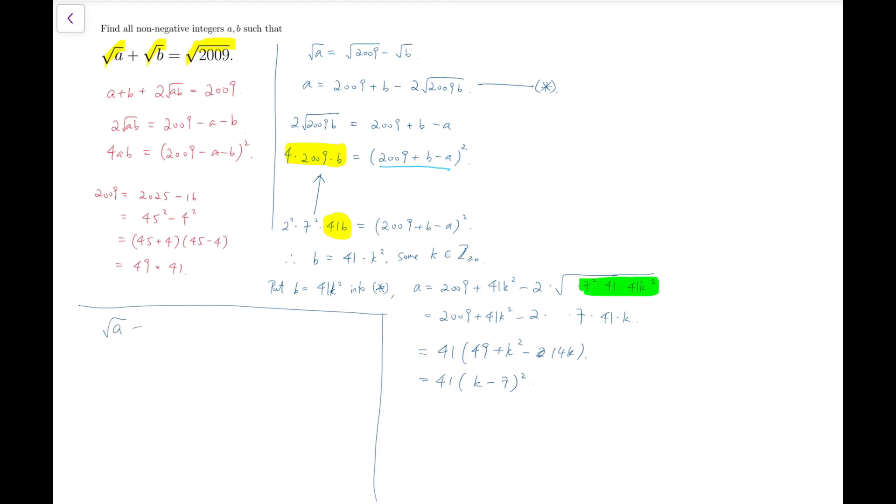And that means the square root of a has to be √41 times the absolute value of (k minus 7). I intentionally added an absolute value on k minus 7 because we do not know whether k is actually larger or smaller than 7, but we have to ensure that the square root of a under this radical sign has to be a positive number.